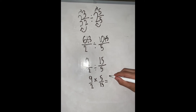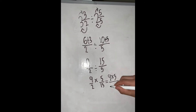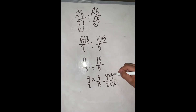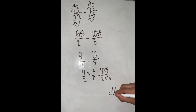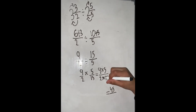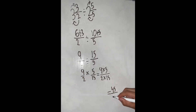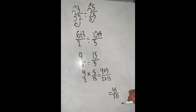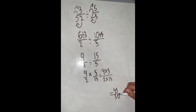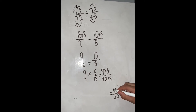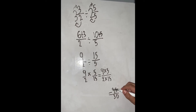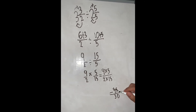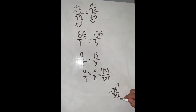And then we are going to write equals 9 times 5 over 2 times 15. So, 9 times 5 equals 45, and our denominator is going to be 2 times 15 equals 30. So our denominator is 30. We have to make the number smaller, so I am going to divide 45 by 15. 45 divided by 15 is 3, and 30 divided by 15 is 2.